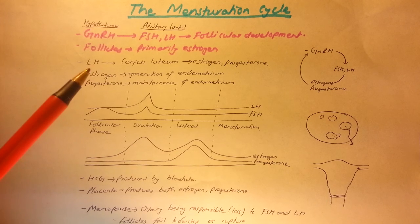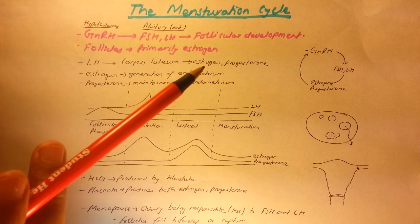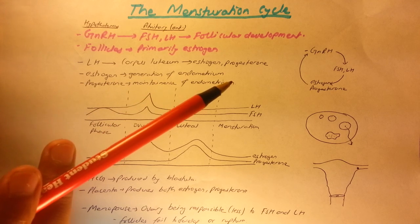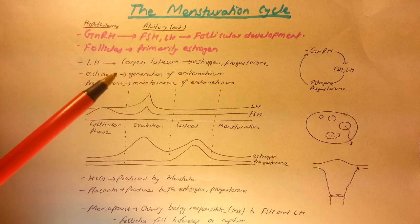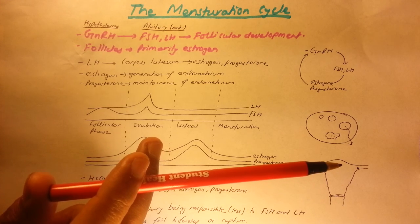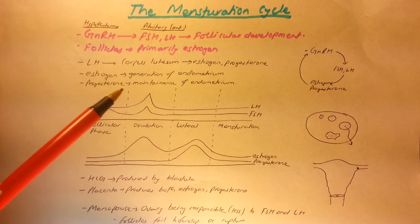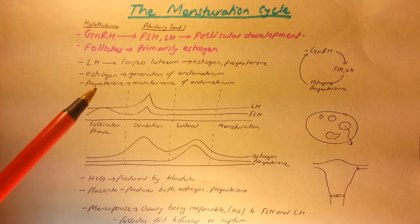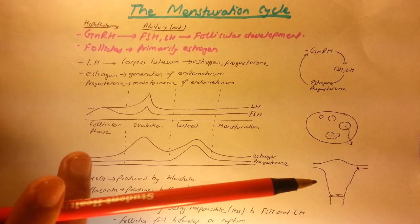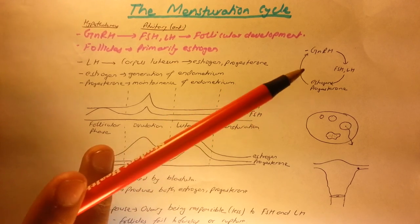The corpus luteum is maintained by luteinizing hormone and can produce both estrogen and progesterone. Estrogen helps in regeneration of the endometrium after it's lost during menstruation. The endometrium is the inside layer of the uterus — it makes the uterus ready to receive a growing embryo. Progesterone helps to maintain the endometrium, while estrogen helps to regenerate it after menstruation, because during menstruation the endometrium breaks down and falls out.